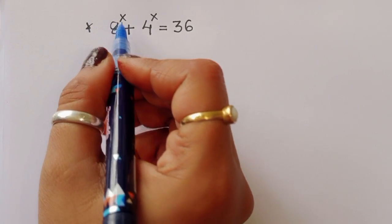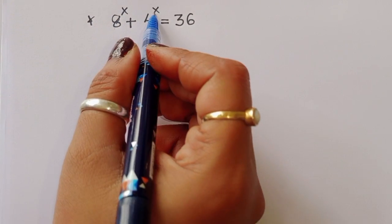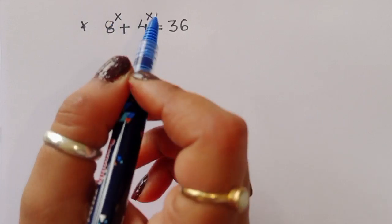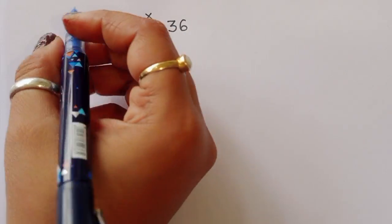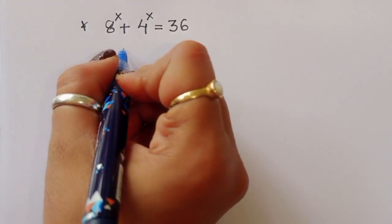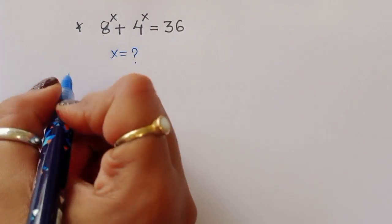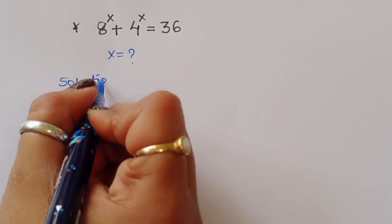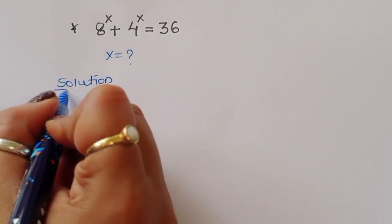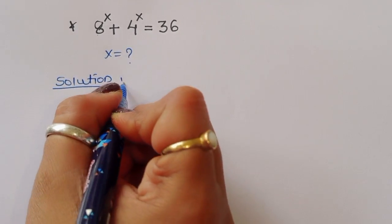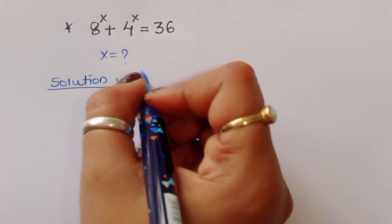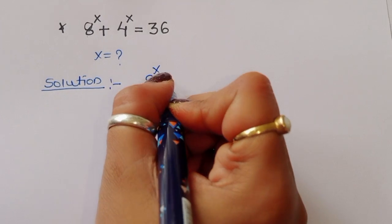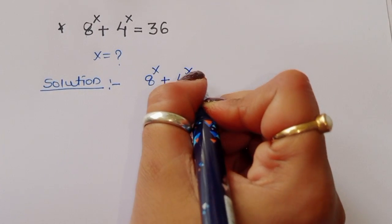The question is: given 8^x + 4^x = 36, we have to find the value of x. Let's see the solution — what is x equal to? How can we find the value of x? What is given: 8^x + 4^x = 36.